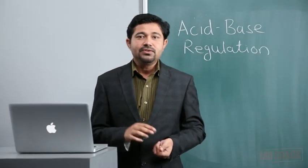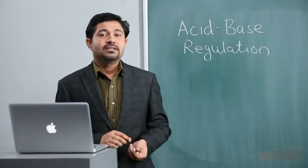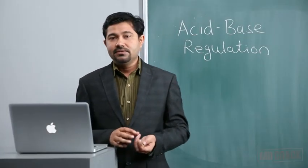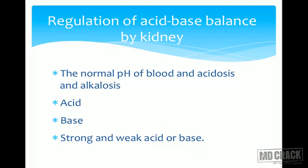Welcome to the new session of renal physiology on acid-base regulation. The normal pH of the arterial blood is 7.4, whereas venous blood is 7.35. This pH should be maintained within a very narrow range, otherwise a lot of metabolic disturbances can occur.